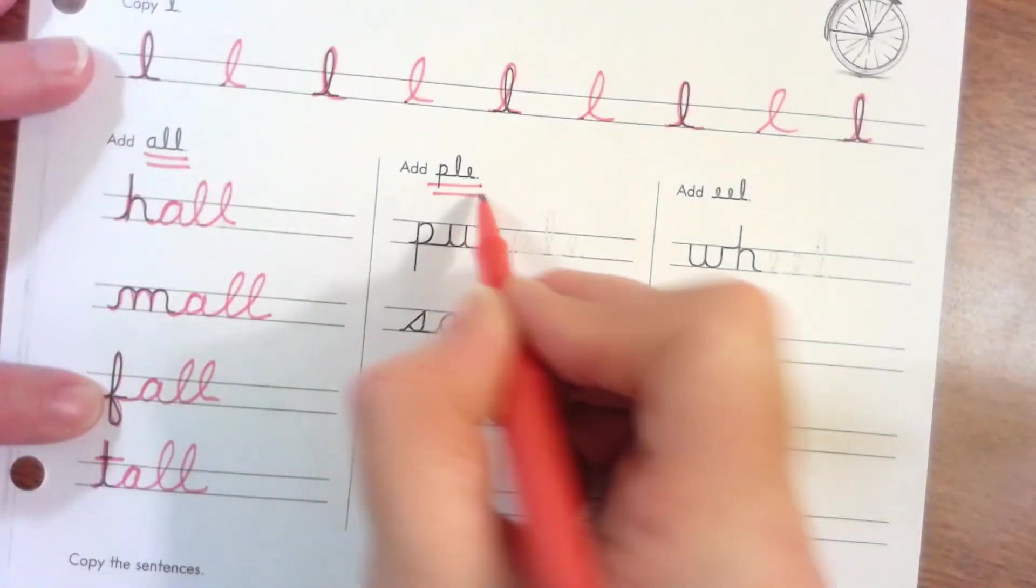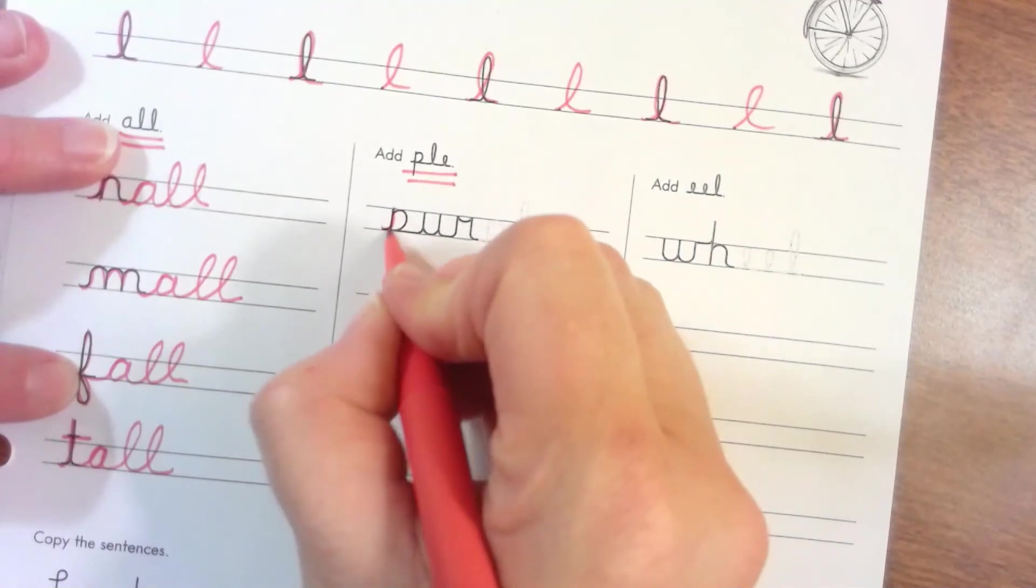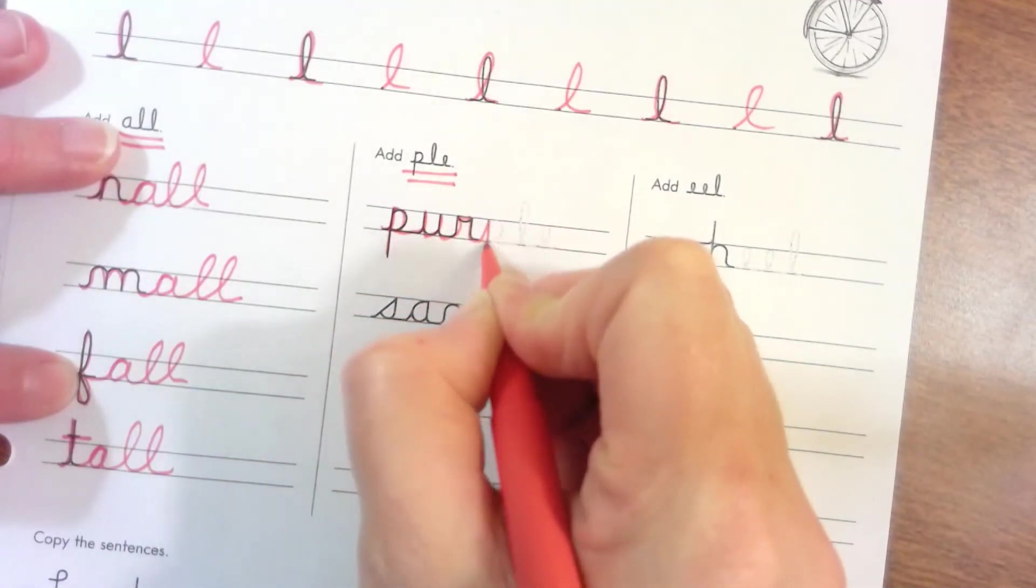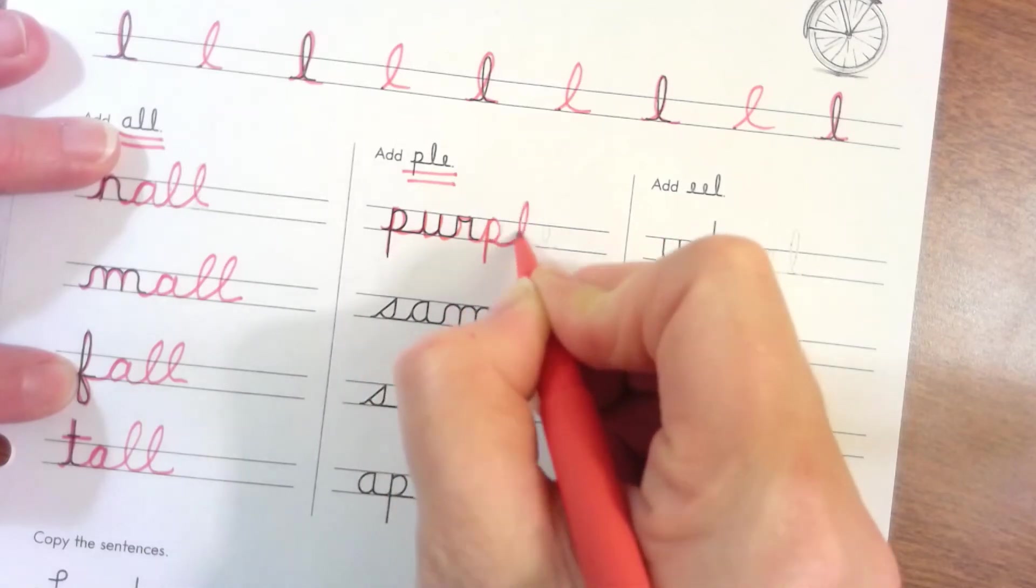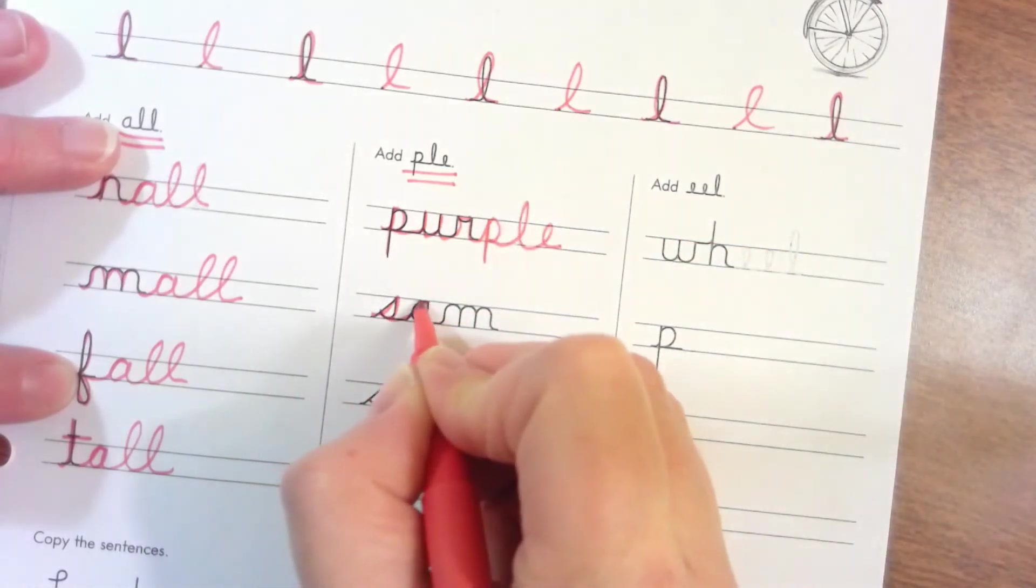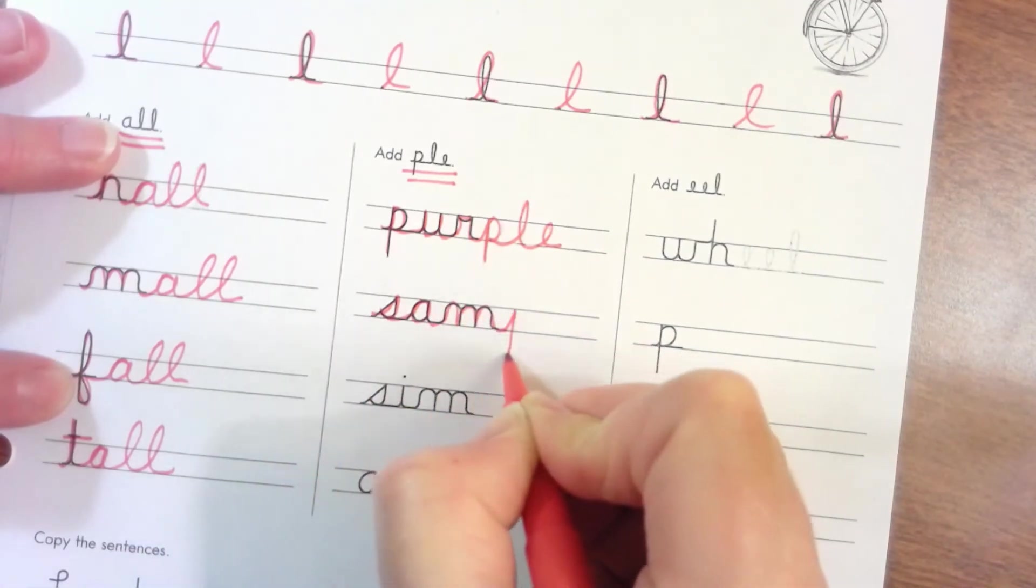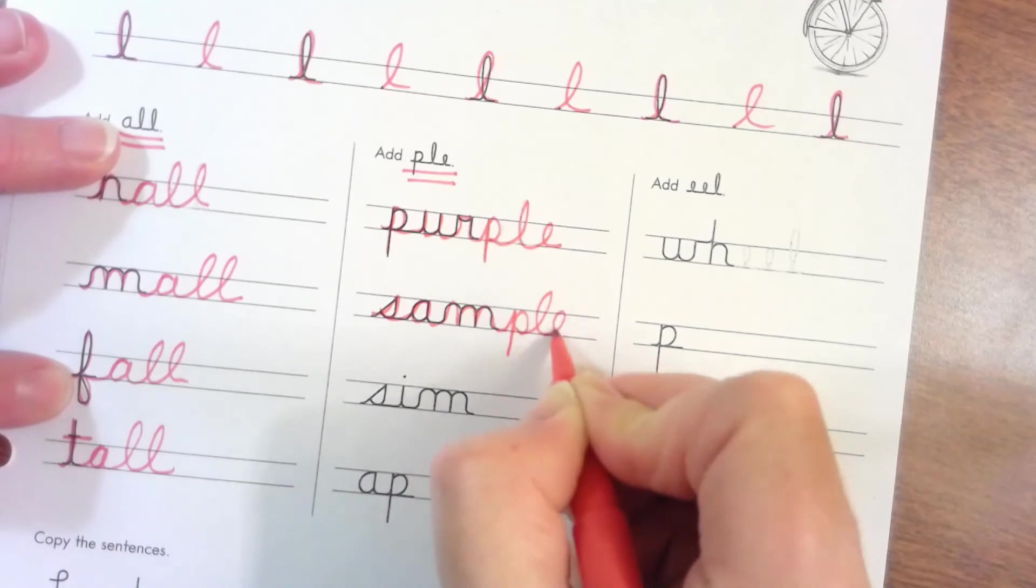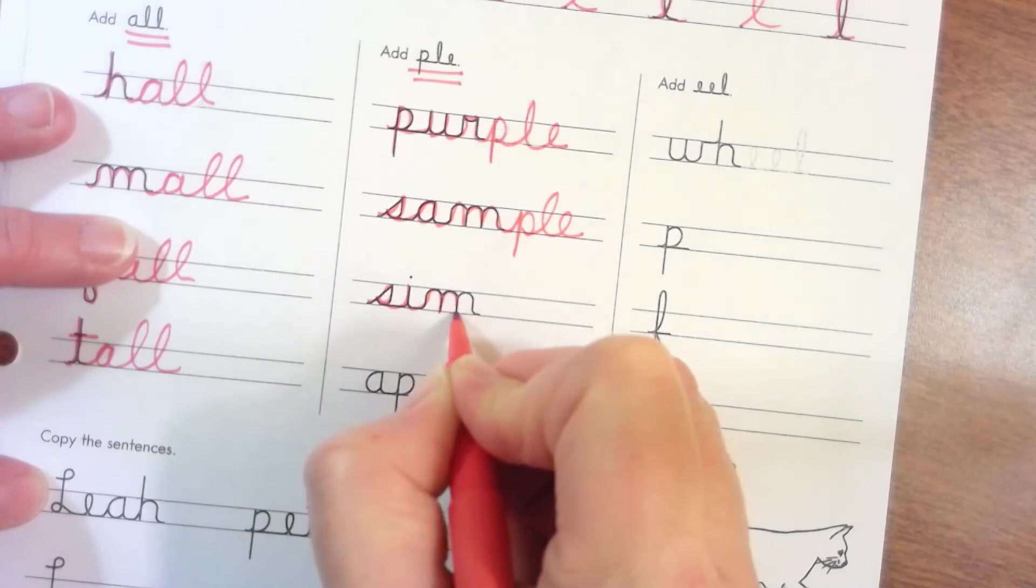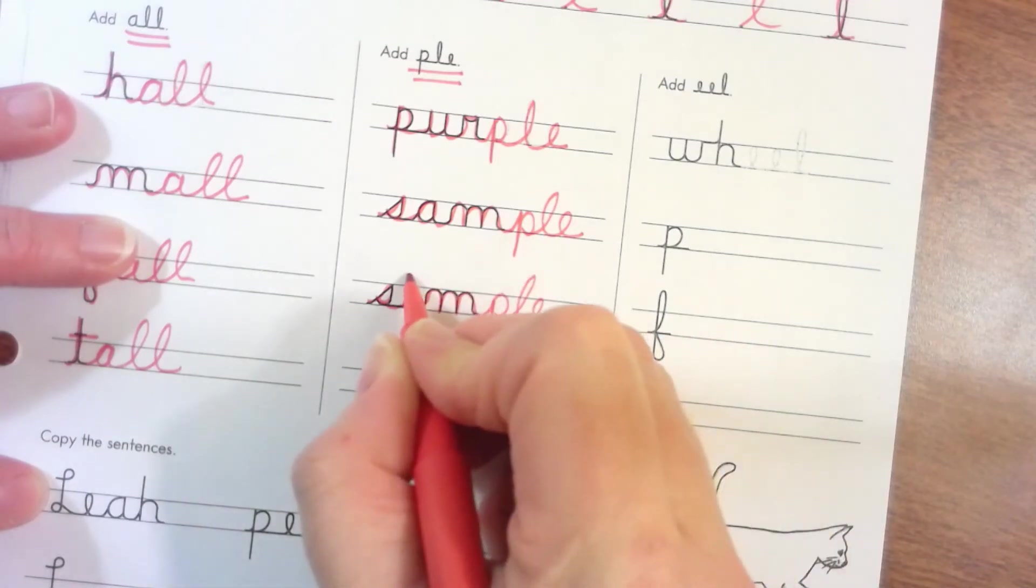They want us to add 'ple' to the end. This is muscle memory, we can do this. Purple. This is sample. Sample. Apple.